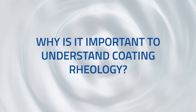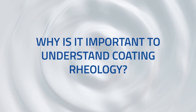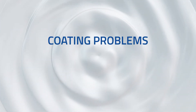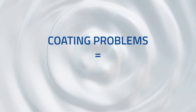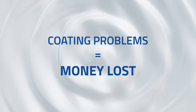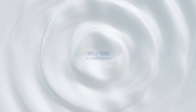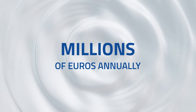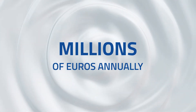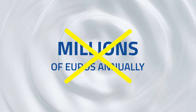Why is it important to understand coating rheology? Coating problems are a significant reason for wasting money in the process. Typically 10 to 20 euros per produced tonne. This can sum up to millions of euros annually. We think that is a lot and just wrong.